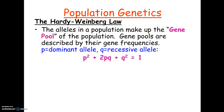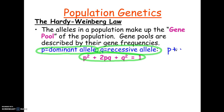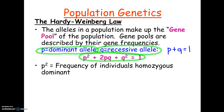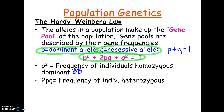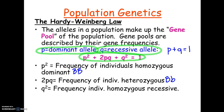On the AP formula sheet, they tell you this formula and that P represents the frequency of the dominant allele and Q is the recessive allele, and that P + Q = 1. What they don't tell you — so you need to know — is that P² represents the frequency of individuals who are homozygous dominant (big B big B), 2pq represents heterozygous individuals (big B little b), and Q² represents homozygous recessive individuals (little b little b).